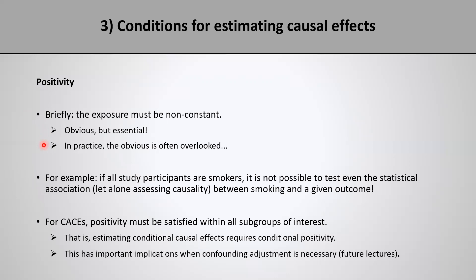Just to give a simple example: if all study participants are smokers, it is not possible to even test the statistical association between smoking and a given disease outcome, let alone assessing causality, which is a much stronger question than simply statistical association.